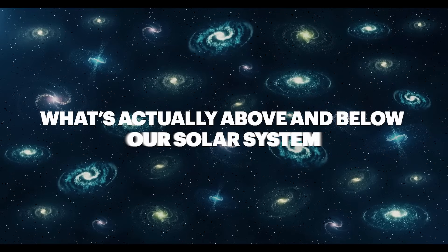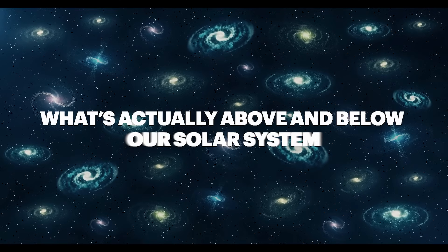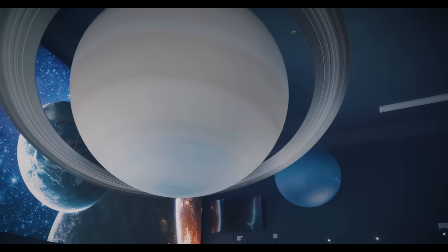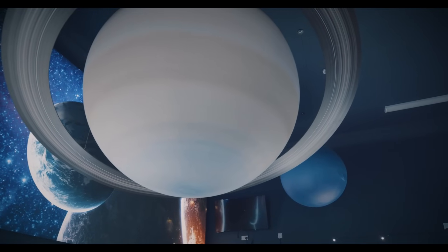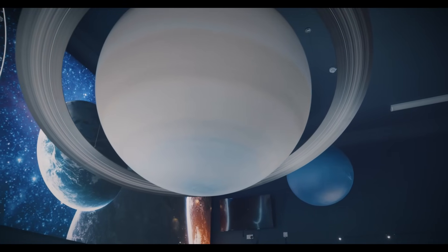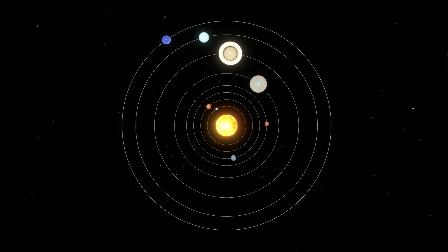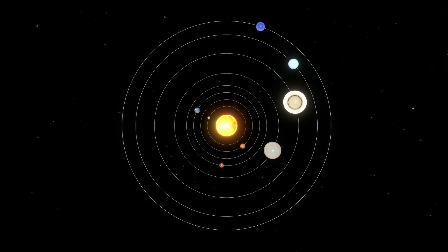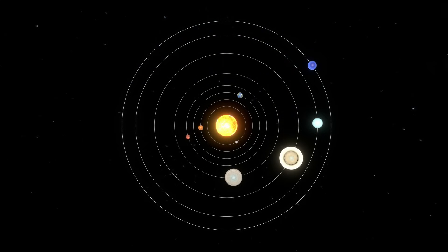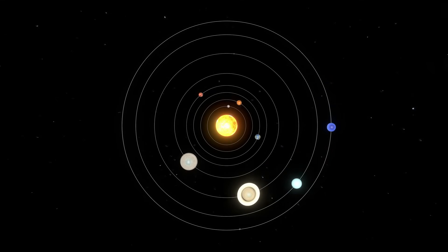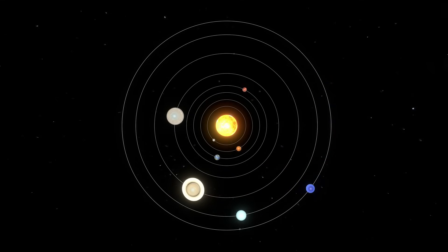What's actually above and below our solar system? Ever wondered if astronomers have been deliberately hiding the truth about our solar system from you? Why do textbooks keep showing that suspiciously perfect flat diagram when the reality above and below our cosmic neighborhood tells a completely different story?